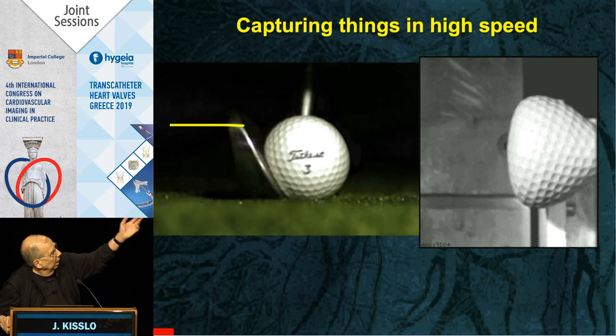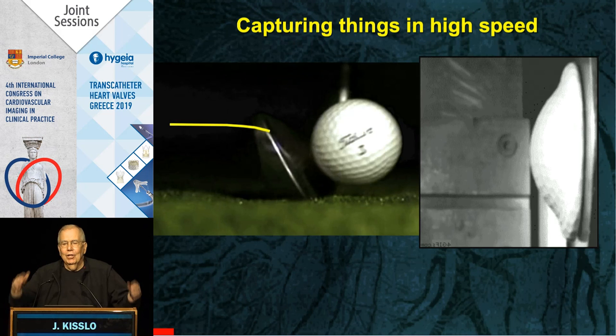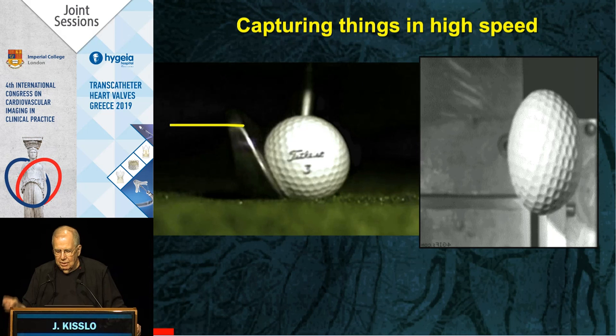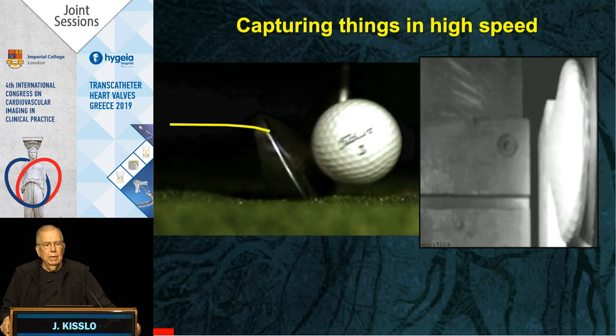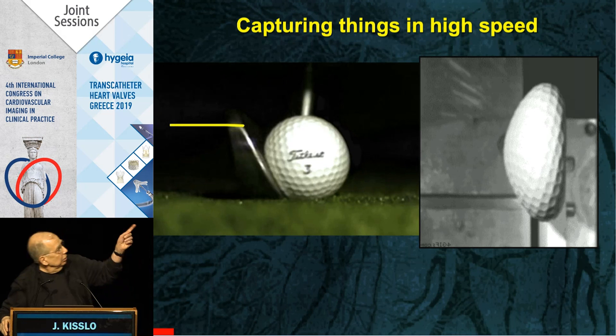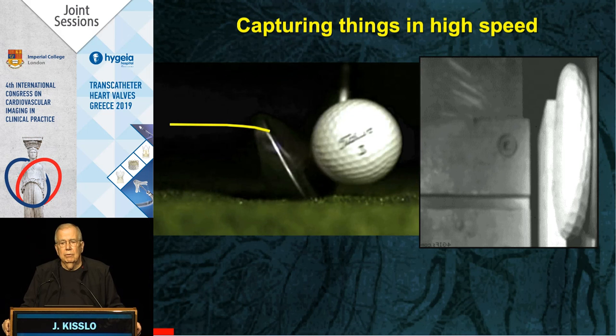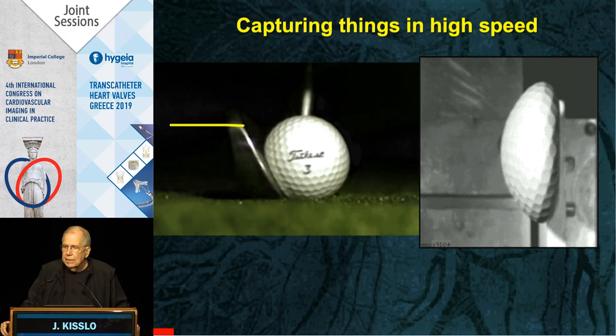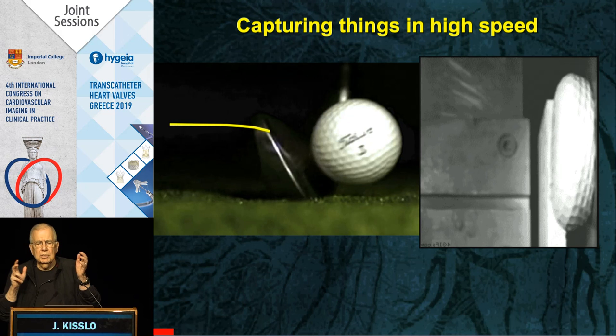You may wonder why I have a picture of a golf ball up here — I'll unravel the mystery. What we need to do is image very fast. If we can image very fast, then we ought to be able to see micro-contractions of the heart. The golf ball is the example: if you look at it at normal speed it just looks like a golf ball, but at high speed you see incredible deformity — which has led to great designs in golf balls.